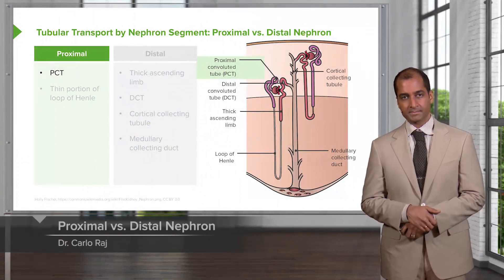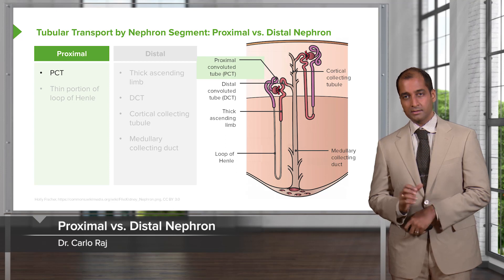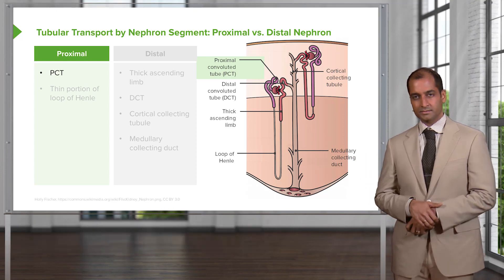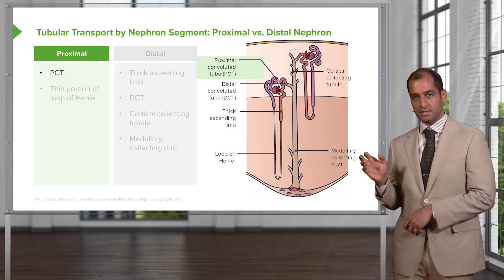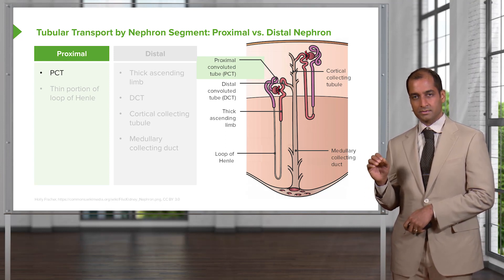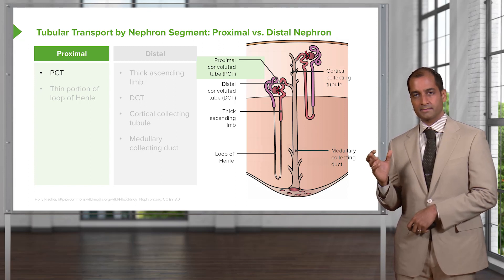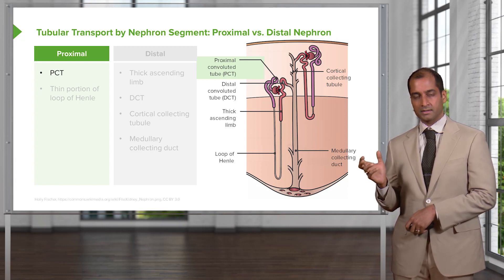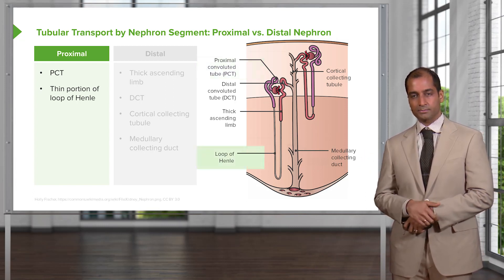Proximal — what does that mean to you? PCT: proximal convoluted tubule. What you want to pay attention to in this picture is there are two nephrons here. Do not get accustomed to only one image, one graph — it's all about perspective. Here, you're looking at the glomerulus, right beyond it you hit the PCT, and then you go through the thin portion.